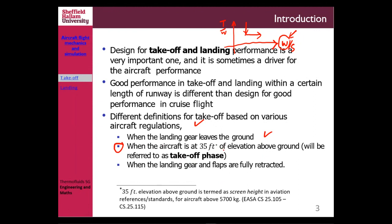For a large airplane such as what you are designing, the screen height is 35 feet. For a small airplane below 5,700 kilograms, the screen height is considered higher at about 50 feet. In terms of flight performance or flight mechanics, this second definition is the one we are trying to establish.